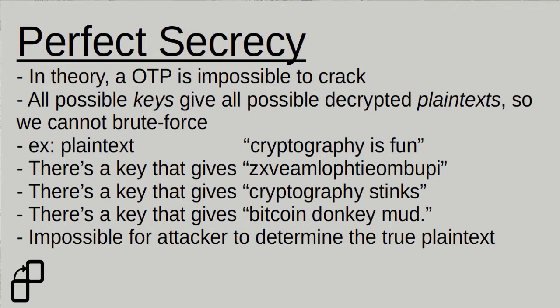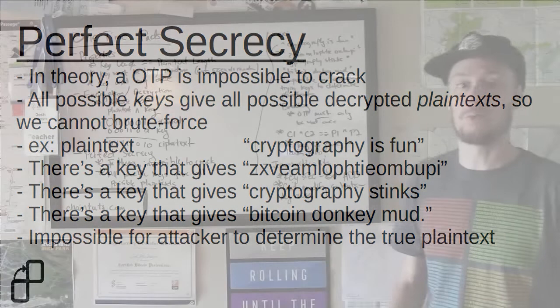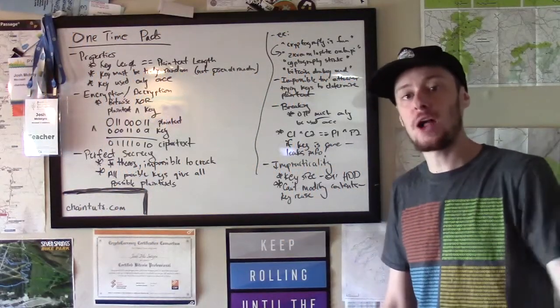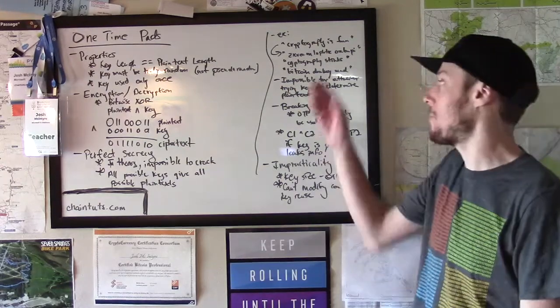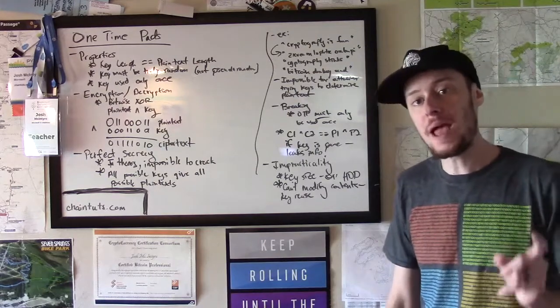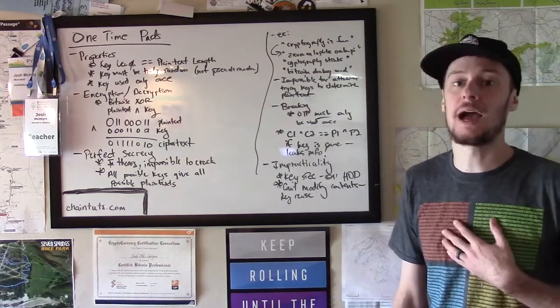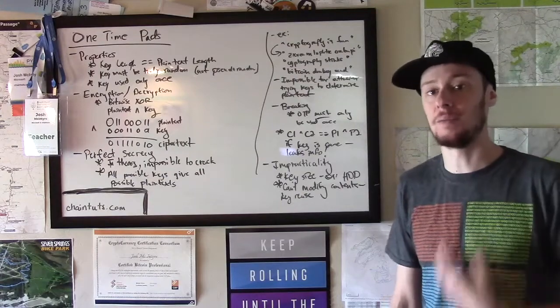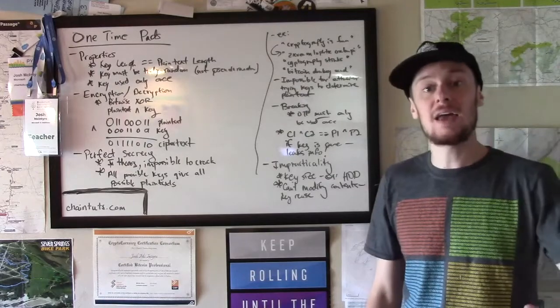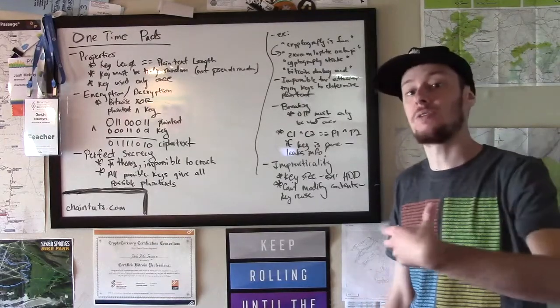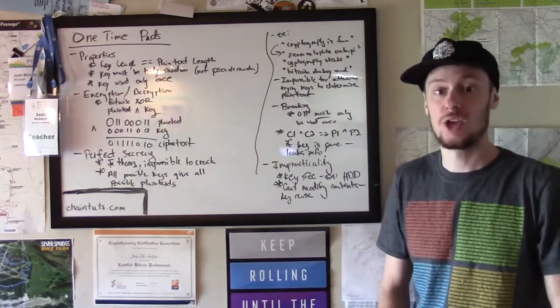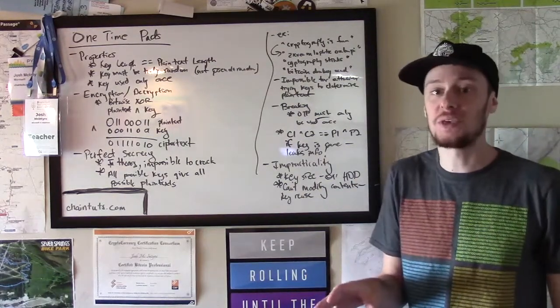So, you could have a key that gives "Bitcoin Donkey Mod," which is also a 19-character message. If you're the attacker and you're trying all these candidate keys and you get back all these possible 19-character messages, there is no way for you to tell which one was actually my original message, my intended plaintext. I know the real message is cryptography is fun. And the person that I shared the correct key with also knows that cryptography is fun is the decrypted message.